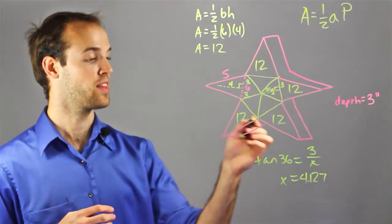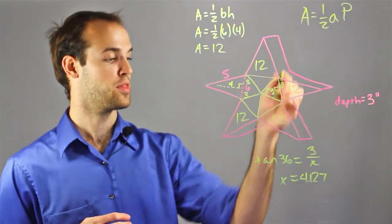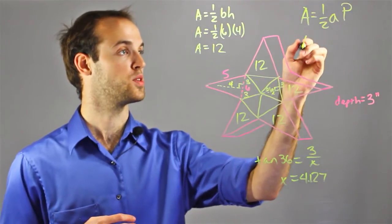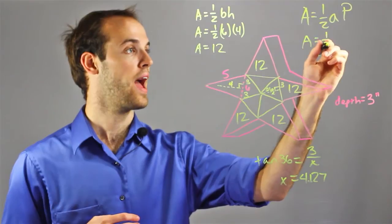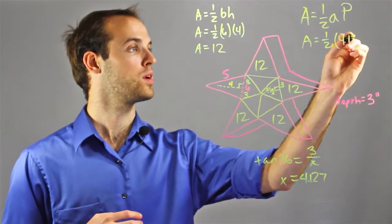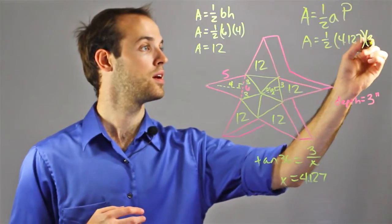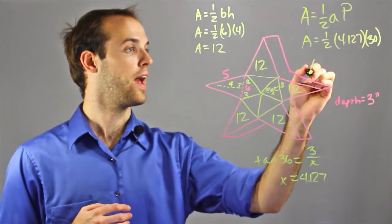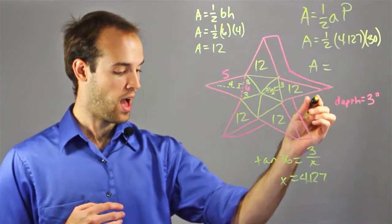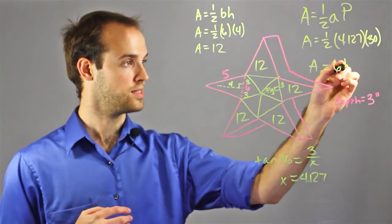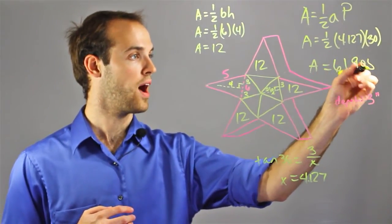And now I can plug that back in for my apothem, because I know my apothem must be 4.127. So the area of the pentagon is equal to one half 4.127 times the perimeter, which I already said was 30. And if I solve that out, I'm going to get the area of the pentagon is equal to 61.905.